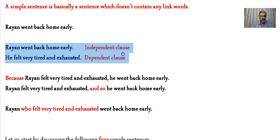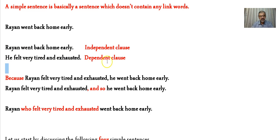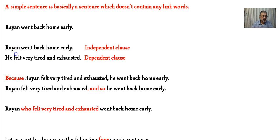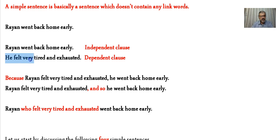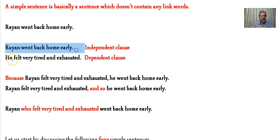Now let's read the following two sentences: 'Ryan went back home early' and 'He felt tired and exhausted.' The first is an independent clause because I can easily identify the doer — Ryan — and what he did — he went back home early. It is a complete sentence both grammatically and meaningfully.